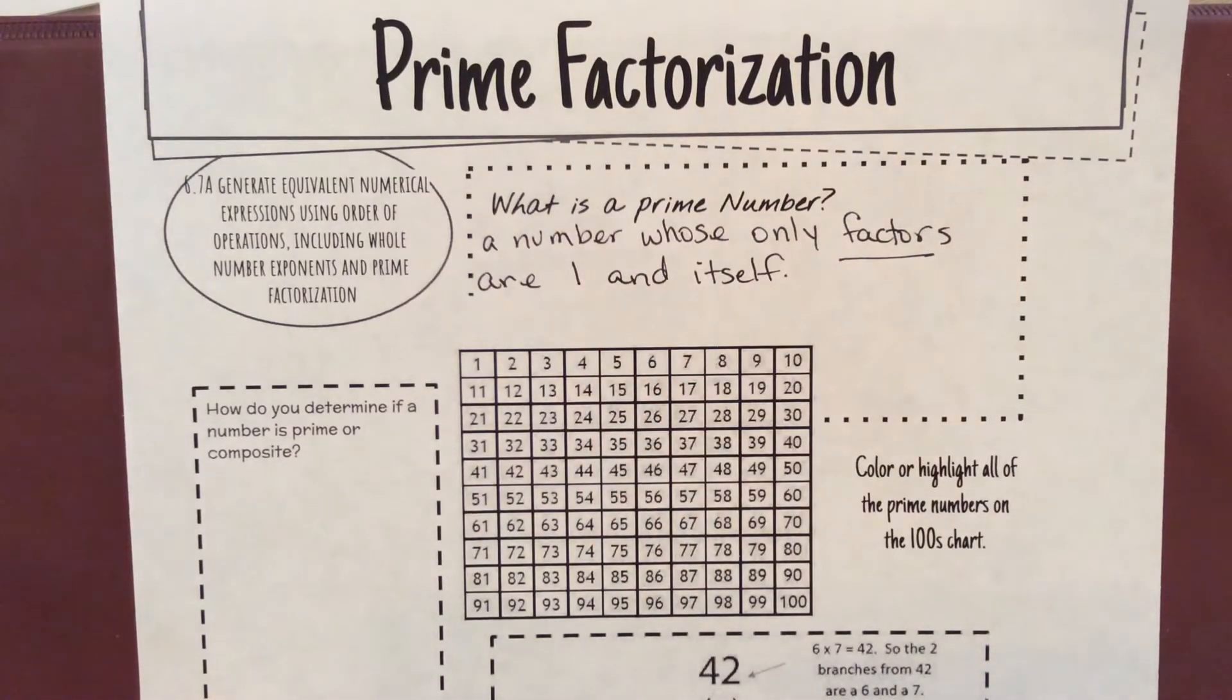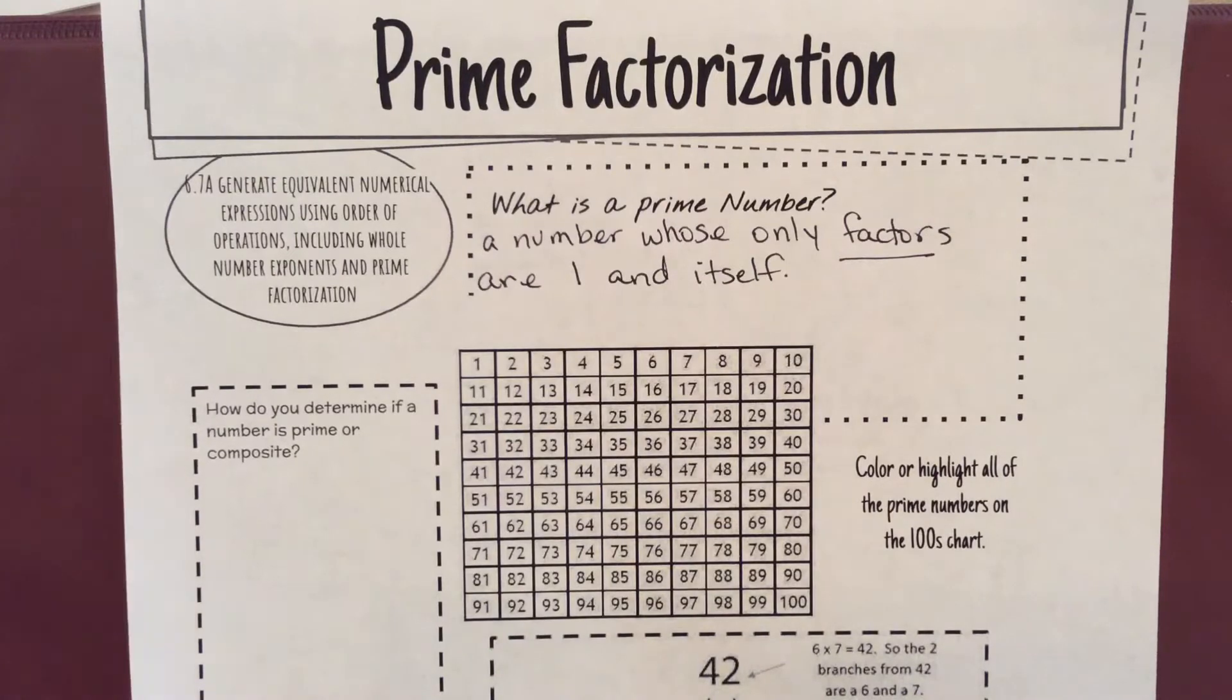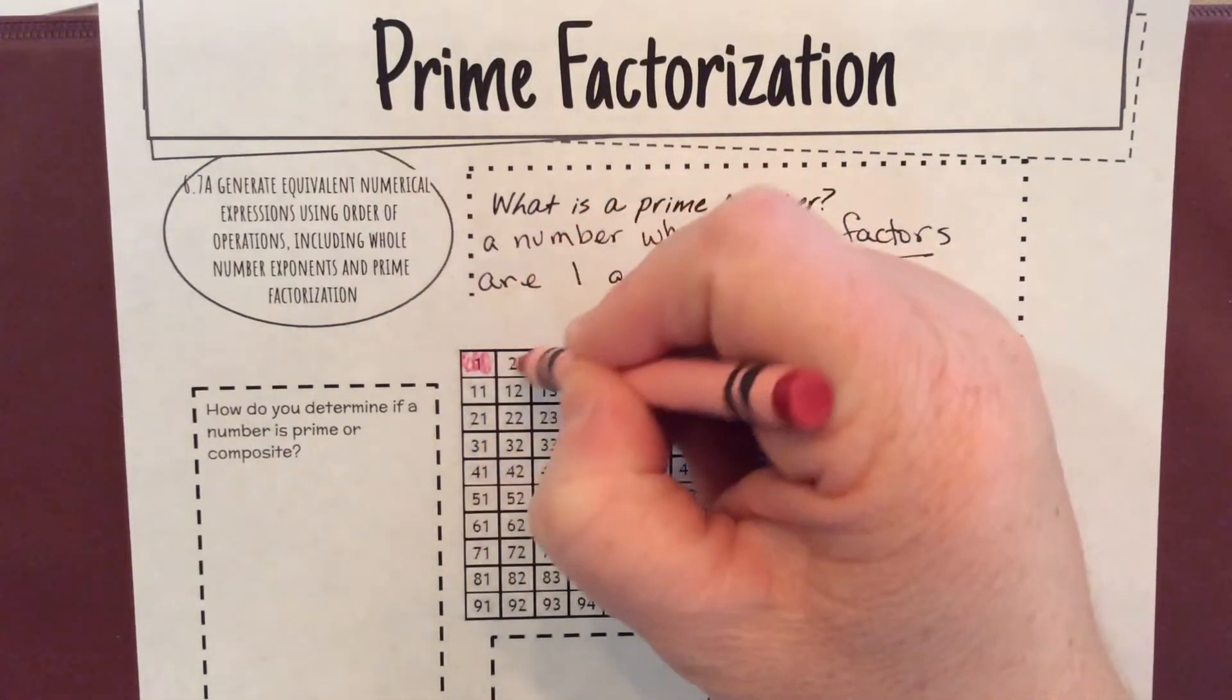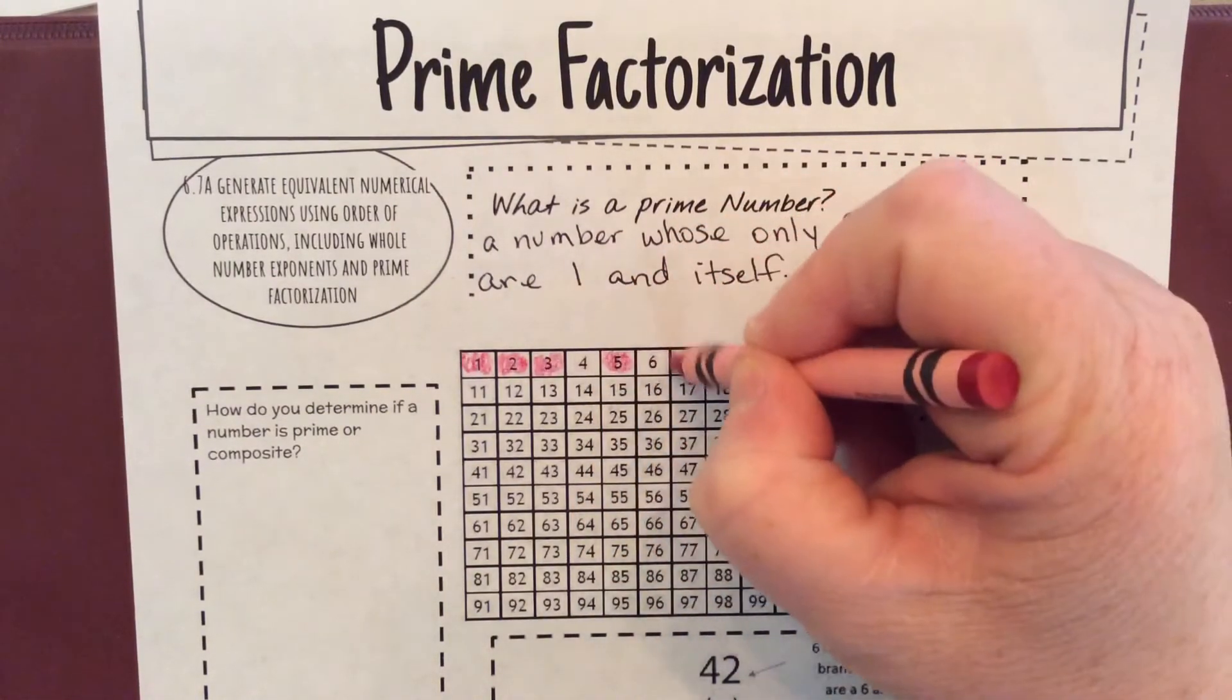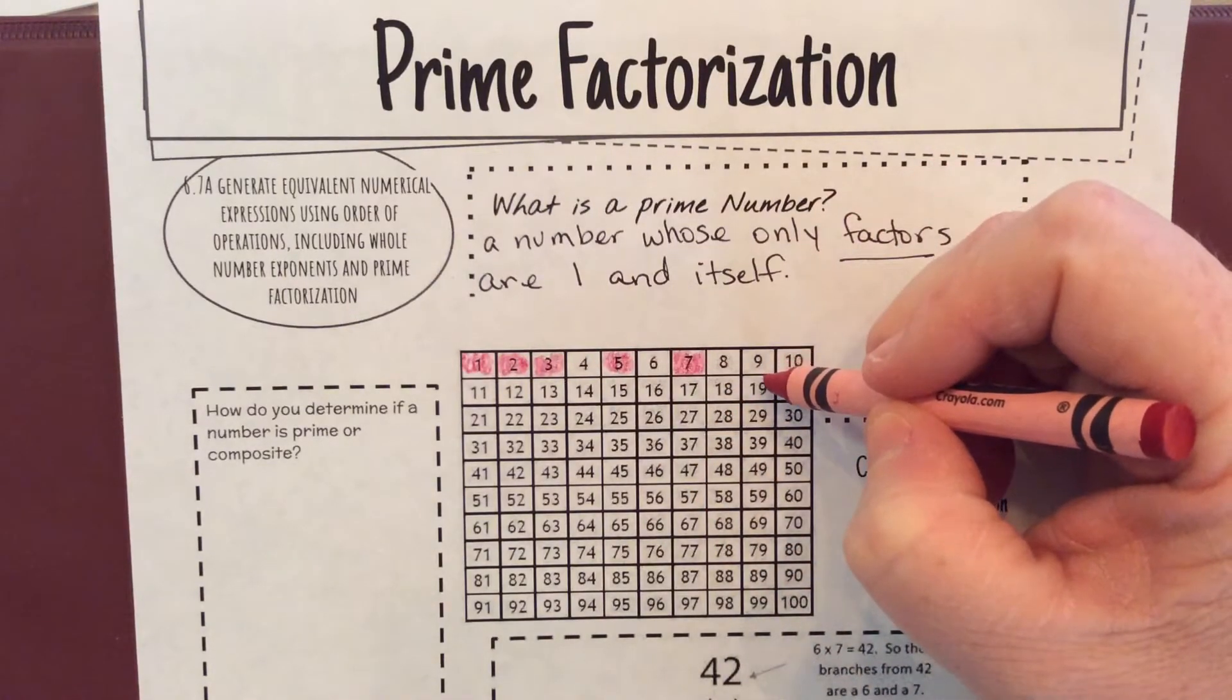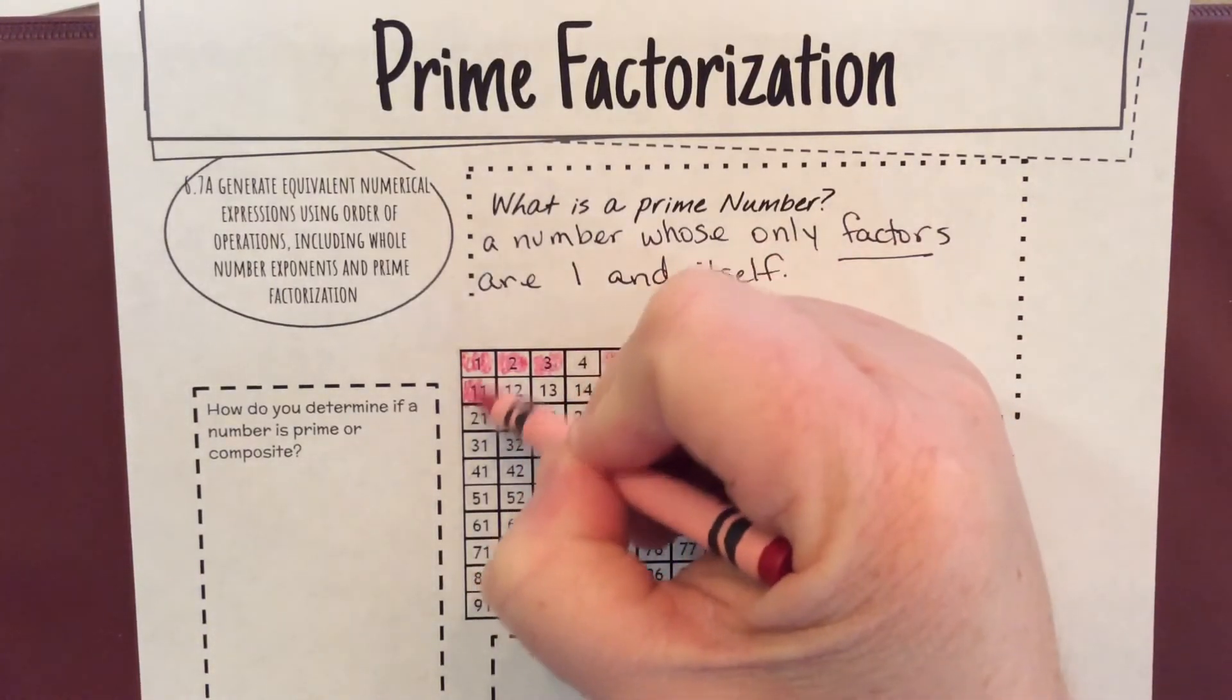So what we're going to do is we're going to color or highlight all of the prime numbers that we see on this hundredths chart. It's important that we know them and we have them here. So I'm going to start with one, because the only numbers are one and itself. Two, because the only factors are two and one. Three is prime, five is prime, seven is prime, nine is not. Most of the prime numbers are odd, but nine is not because three times three and one times nine.